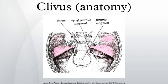The clivus is a part of the cranium at the skull base, a shallow depression behind the dorsum sellae that slopes obliquely backward. It forms a gradual sloping process at the anterior-most portion of the basilar occipital bone at its junction with the sphenoid bone. On axial planes, it sits just posterior to the sphenoid sinuses.